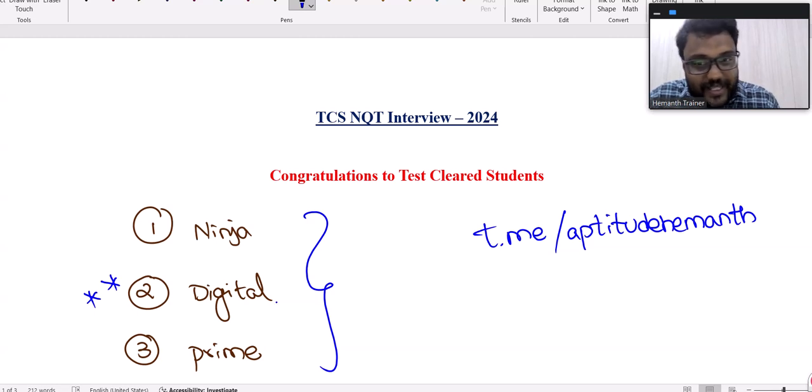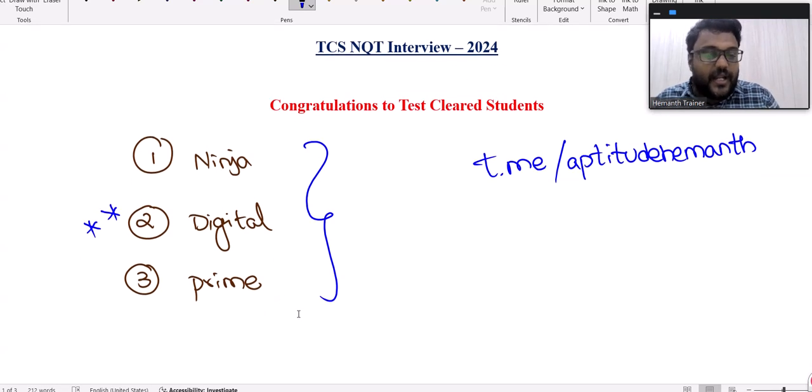If you don't perform well in Prime, you'll get Digital or Ninja interview chance. For first time students, if you try for Digital or Prime and perform well, you get the upgrade, otherwise your previous offer stays with you.